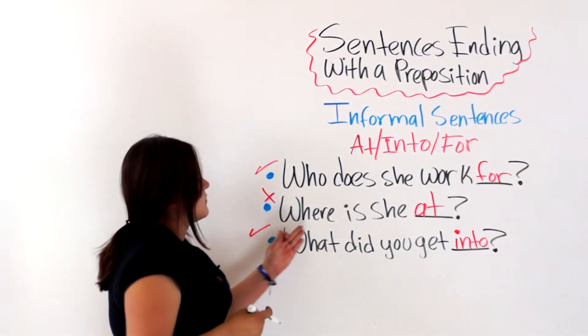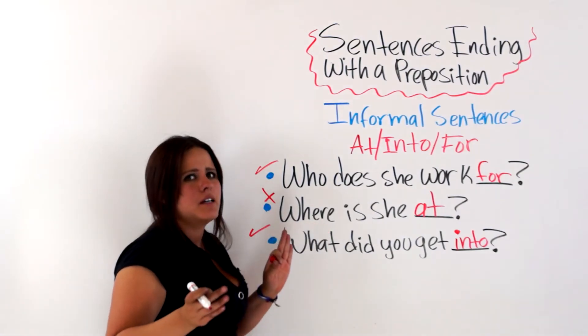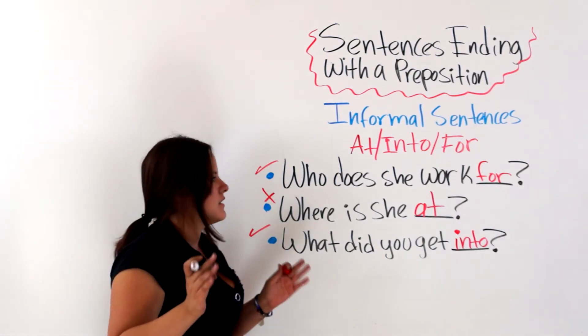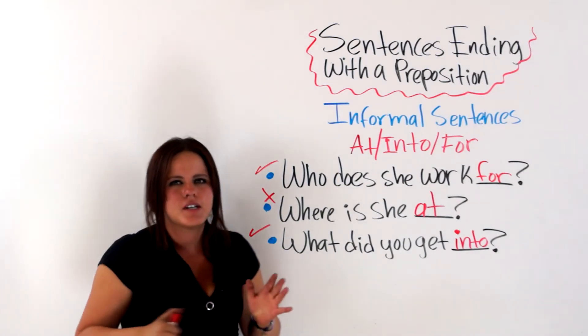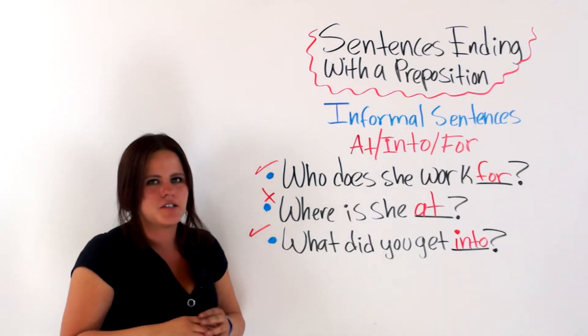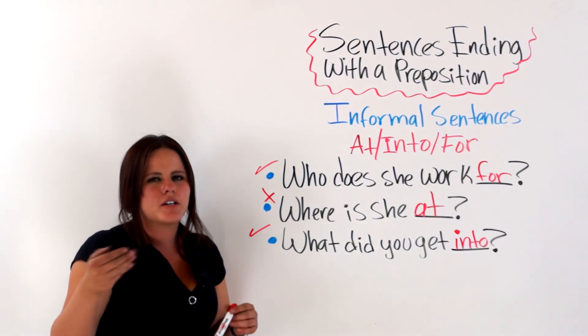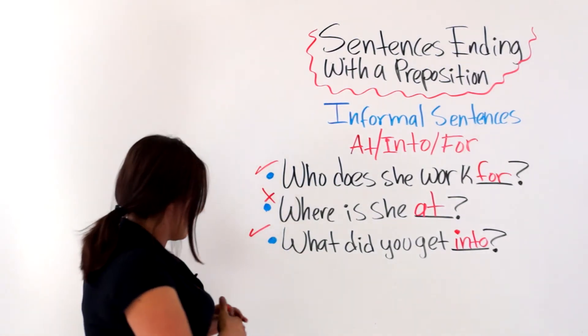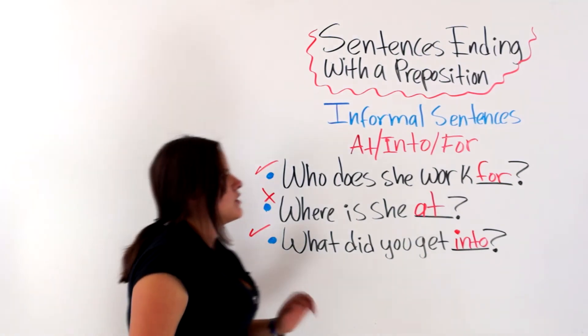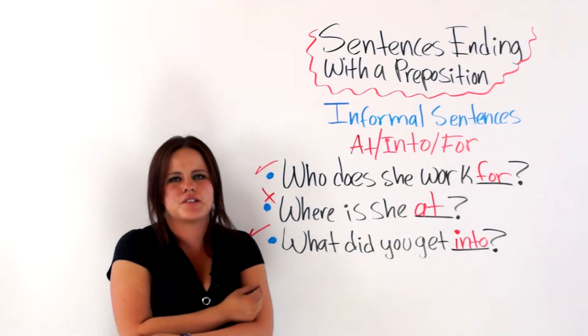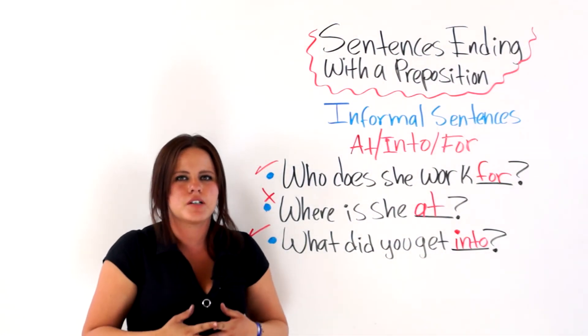And this one is correct also, but it does not make complete sense. It causes redundancy and it does not look good. Where is she at? No, no, no. Where is she? Okay? Do not use prepositions when you do not need to use prepositions. Alright? Because it will look incorrect.